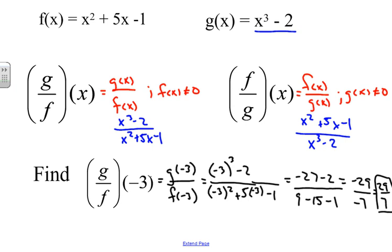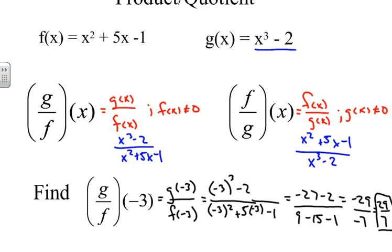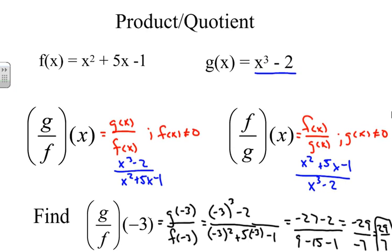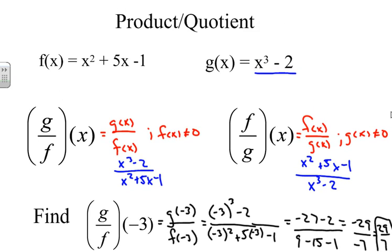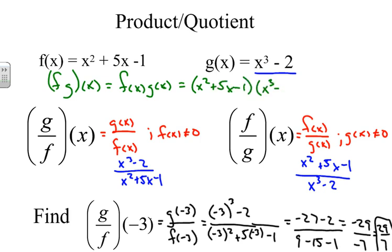That is going through the arithmetic combinations of product and quotient. I guess I didn't do the product, so I can figure it out. If you have the product, we would simply write this. If I want to do f of g of x, what that means is I'm taking f of x times g of x, which would be x squared plus 5x minus 1 times x cubed minus 2. If you write that out, you would have to simplify it, but that's the product. So those are the arithmetic properties of functions.